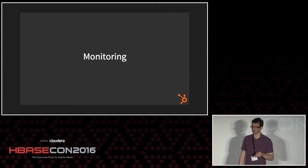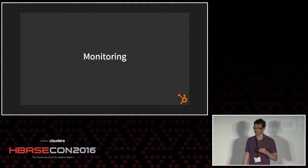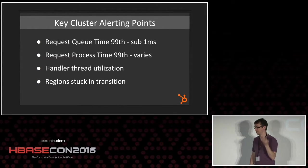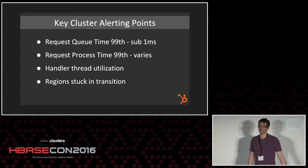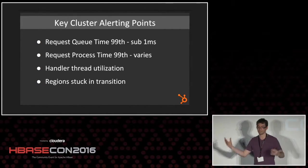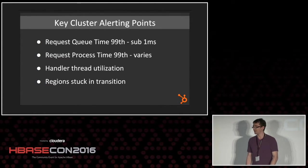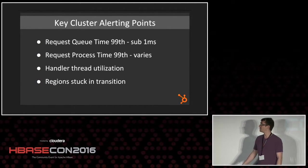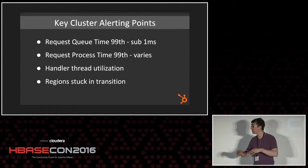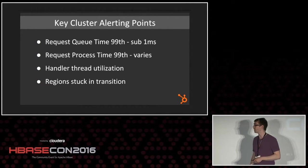The last thing I want to talk about is monitoring — things we've noticed are important to keep an eye on. The main thing is request queue time: we want it under a millisecond, basically zero almost all the time. Most of our clusters keep to that. If it goes up, it quickly propagates to all our applications, which is problematic in a microservice architecture — even 1% represents the pain our clients are feeling. The other thing is request process time, which is usually stable but may go up during compactions.